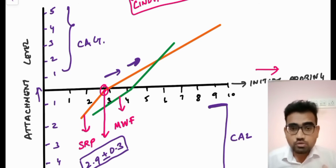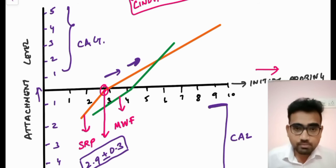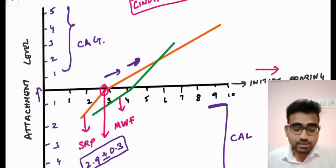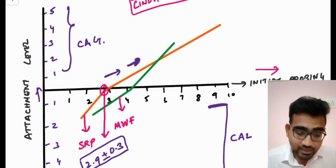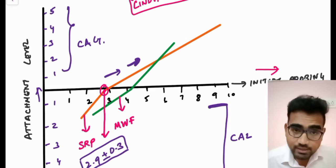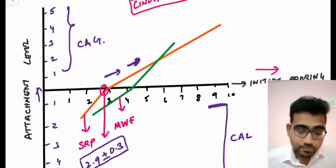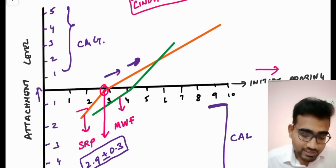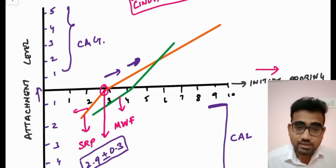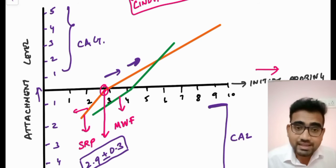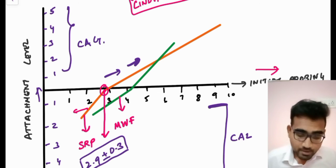The critical probing depth for SRP is 2.9 mm. If a patient comes to you with a probing depth of 4 mm and you do SRP, that is going to result in clinical attachment gain. If it is less than 2.9 and you are doing scaling and root planing, as you can see from the orange line going down, it is going to be clinical attachment loss — which fulfills the definition.